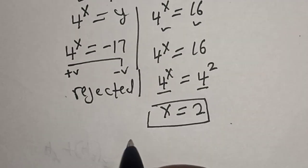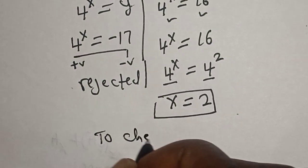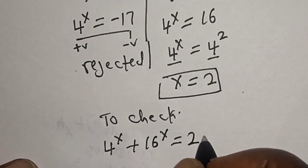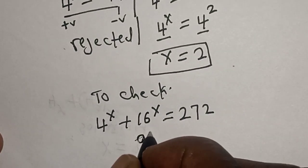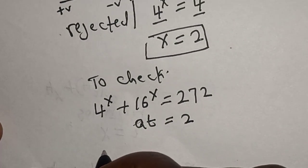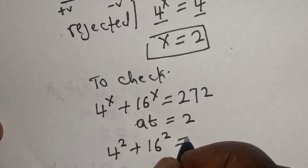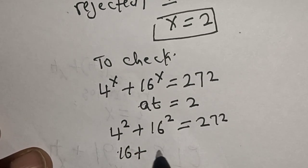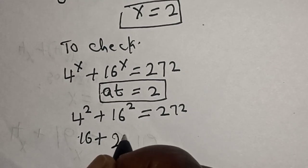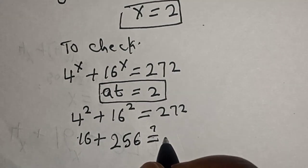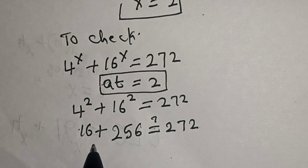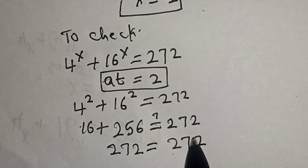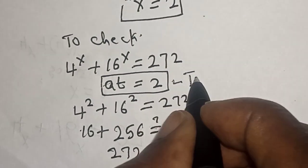We can check to confirm if our answer is correct. Substituting s equal to 2 into 4 raised to power s plus 16 raised to power s: we get 4 squared plus 16 squared, which is 16 plus 256, giving 272, which is equal to 272. Our answer is confirmed: s is equal to 2.